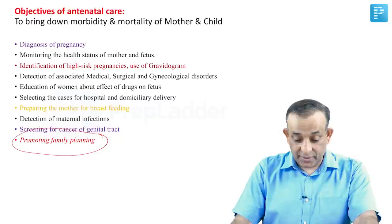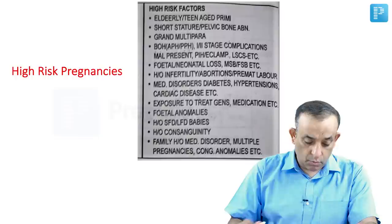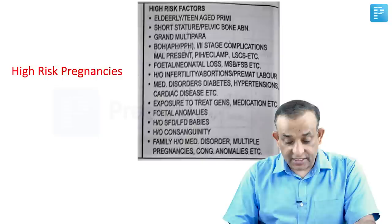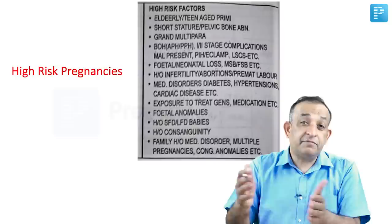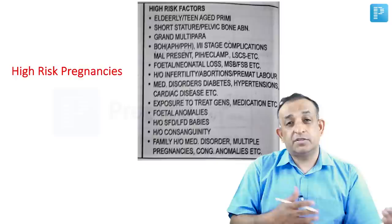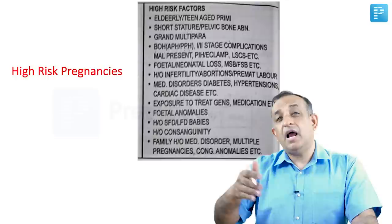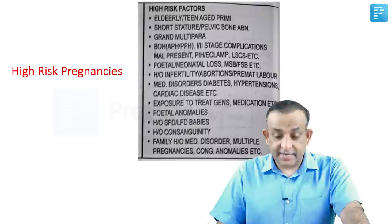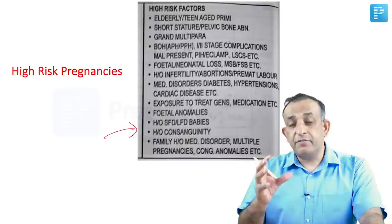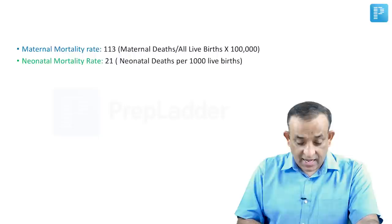High-risk pregnancies include short-statured women, early or teenage pregnancies, grand multiparas — women who have delivered four children and are coming for a fifth, sixth, or seventh pregnancy — women with bad obstetric histories, medical disorders, exposure to medications, and fetal anomalies. We must identify these and ensure antenatal care brings down maternal and infant mortality.